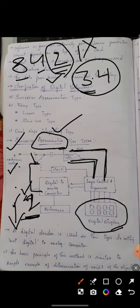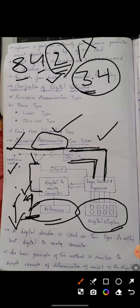I had already said that the digital to analog converter, the DAC converter, will require a reference and there will be a reference here. This is the principle on which the successive approximation type DVM works.